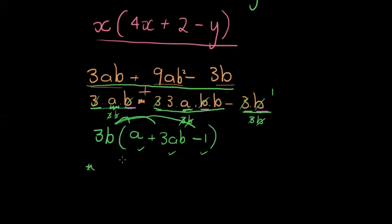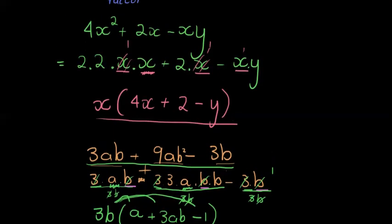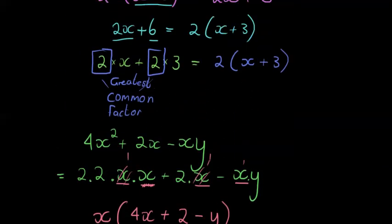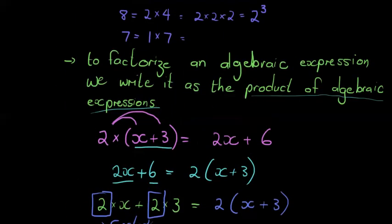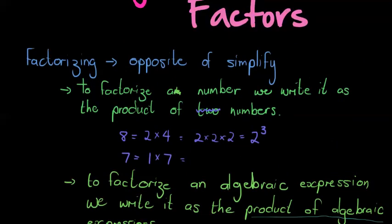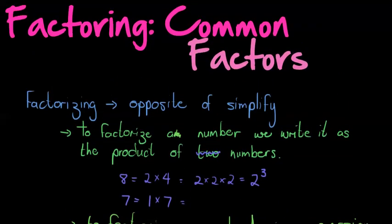Be very careful: the last term is not zero, it's negative 1, so that when you distribute the 3b back in you get your original expression. That's it for taking out the greatest common factor. There are more difficult examples, and in the next video I'll look at some more challenging examples. See you then.